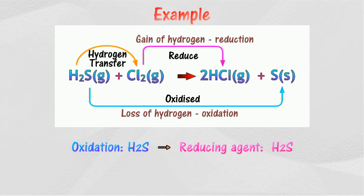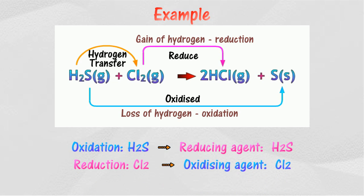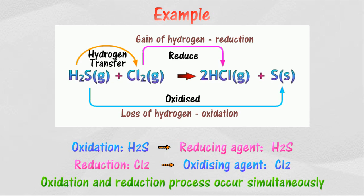Hydrogen sulfide acts as a reducing agent, because it reduces chlorine to hydrogen chloride. On the other hand, chlorine acts as an oxidizing agent, because it oxidizes hydrogen sulfide to sulfur.